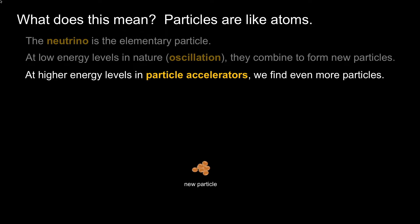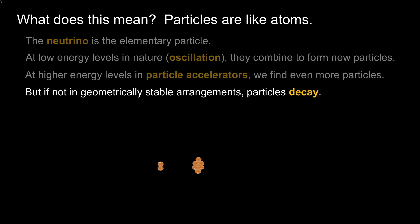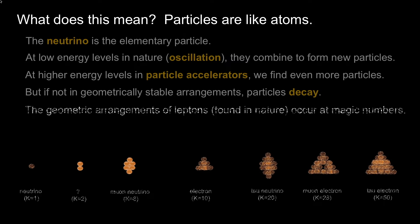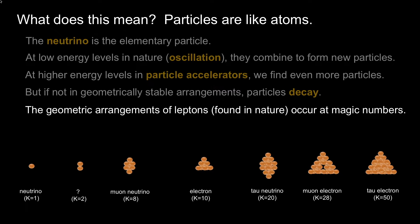Higher energies than just neutrinos being spit from the sun are required to get to even more particles. That's what occurs in particle accelerators such as CERN. We can find even more particles and will continue as energy levels become higher. But the problem is they're not geometrically stable. Particles decay very quickly in accelerators.